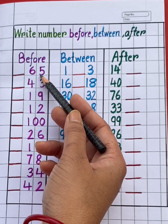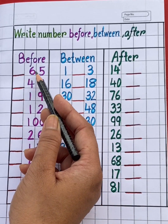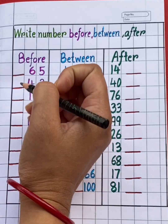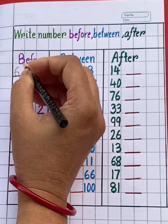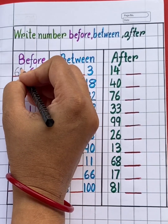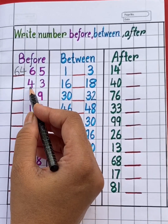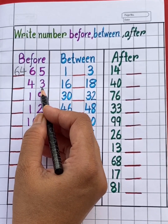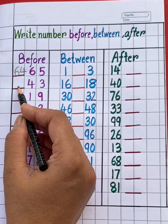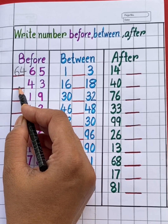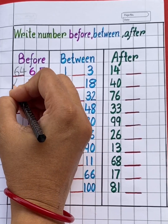65. Which number will come before 65? Yes, before 65 is 64. Next number is 43. Which number will come before 43? Before 43 is 42.